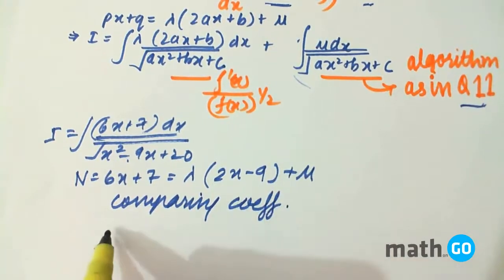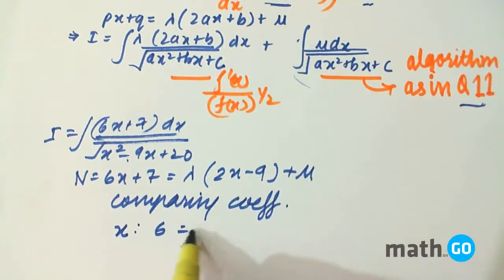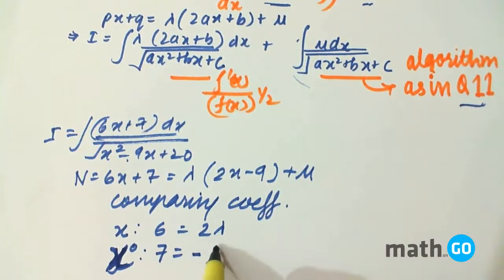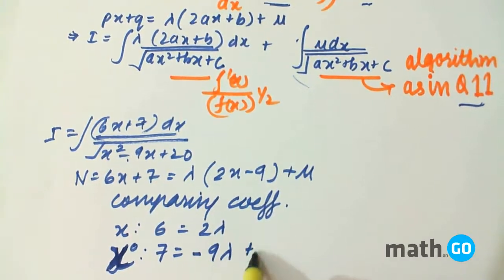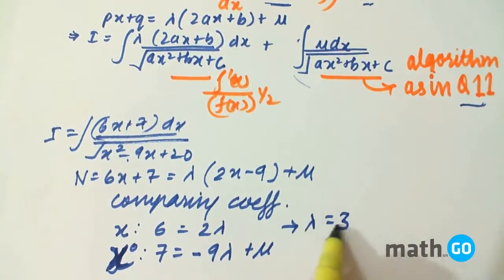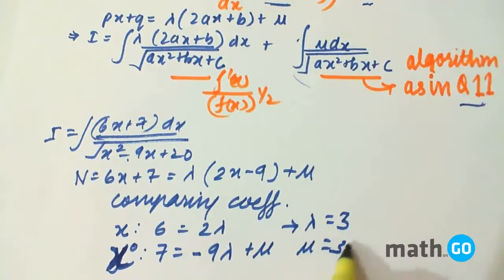Comparing coefficients of x we find that 6 equals to 2 lambda and for x to the power 0 we have 7 equals to minus 9 lambda plus mu. So this gives lambda to be 3 and mu to be 34.